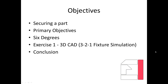The objectives: first of all, we need to secure a part, and then we're going to look at some of the primary objectives in doing that. We're going to talk about the six degrees of freedom, and then we'll follow it up with exercise 1 and bring it into SOLIDWORKS, download some files, and put this very simple sample fixture together, and then that will conclude this.